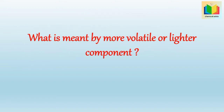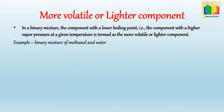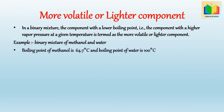What is meant by a more volatile or lighter component? In a binary mixture, the component with a lower boiling point and a higher vapor pressure at a given temperature is termed as the more volatile or lighter component. For example, in a binary mixture of methanol and water, the boiling point of methanol is 64.7°C and the boiling point of water is 100°C. As the boiling point of methanol is less than water, methanol is the more volatile or lighter component.